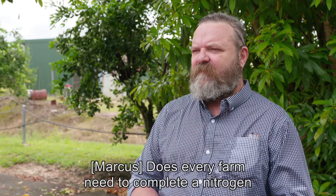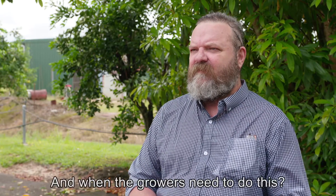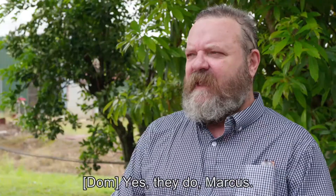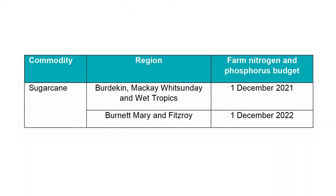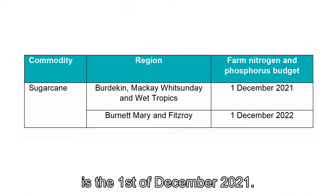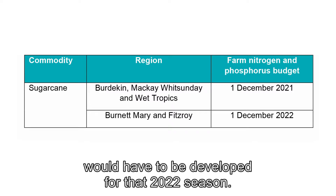Does every farm need to complete a nitrogen and phosphorus budget and when do growers need to do this? Yes they do Marcus, every farm will need to do one. The date at which it's enacted is the 1st of December 2021, so that would mean that the farm budget would have to be developed for the 2022 season.